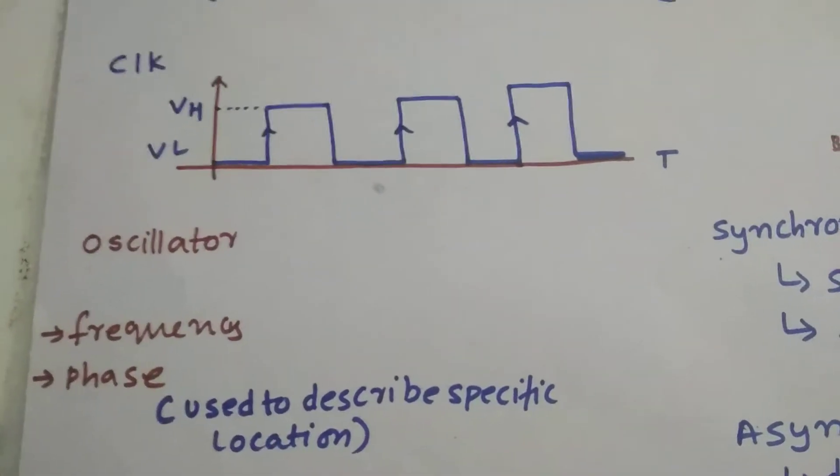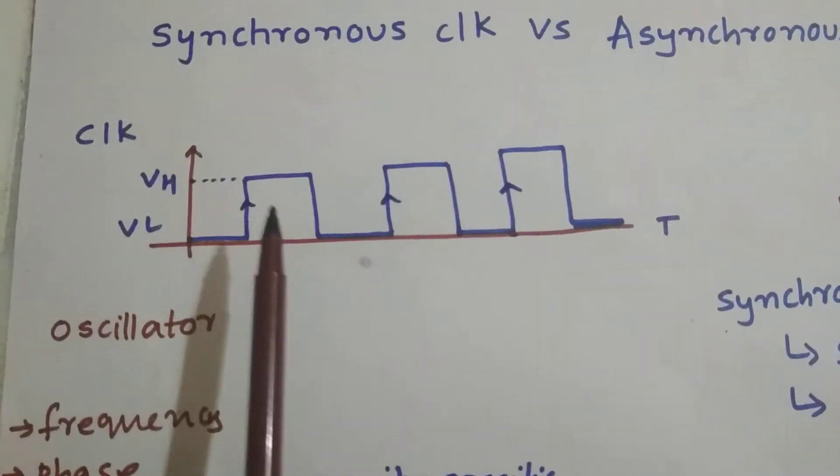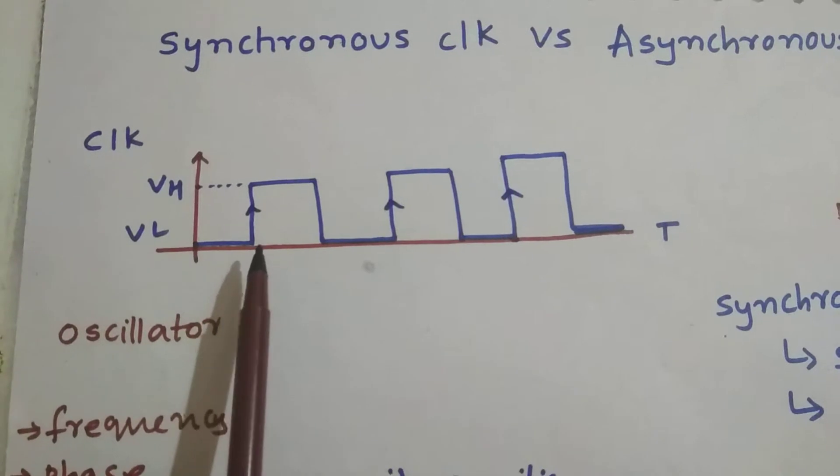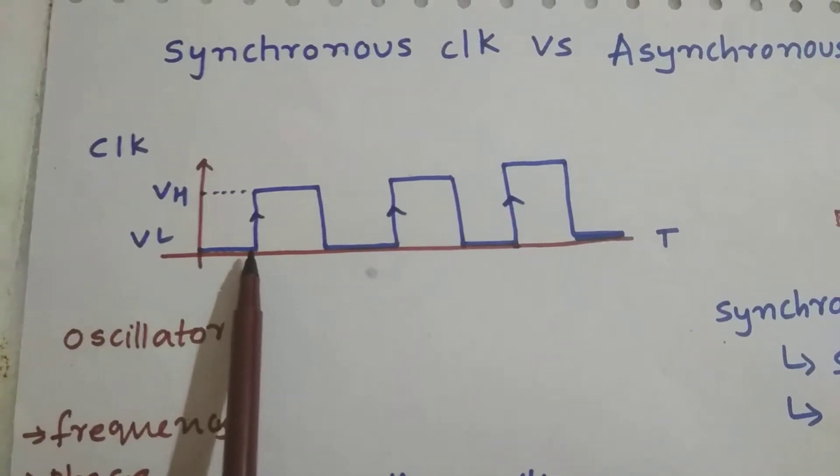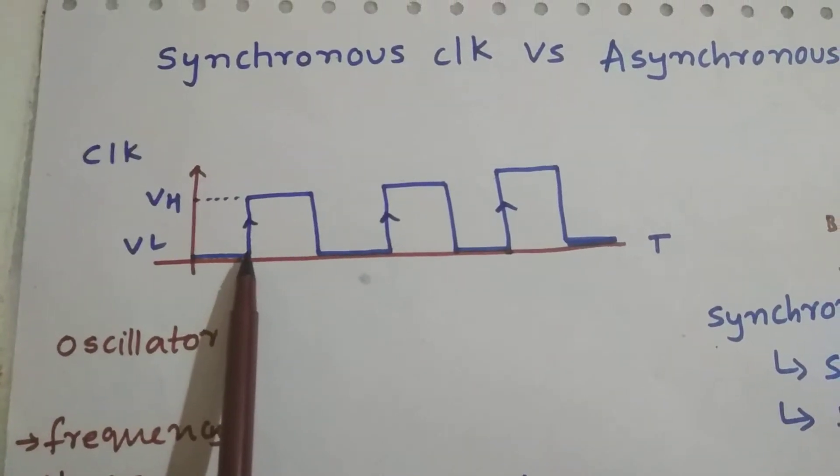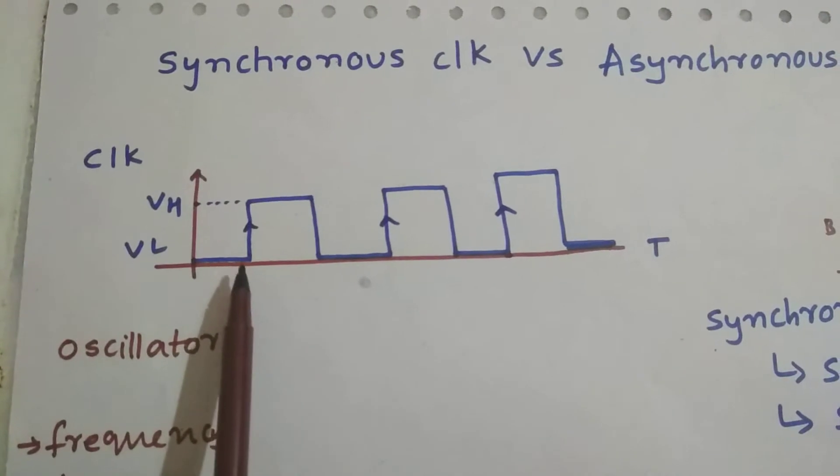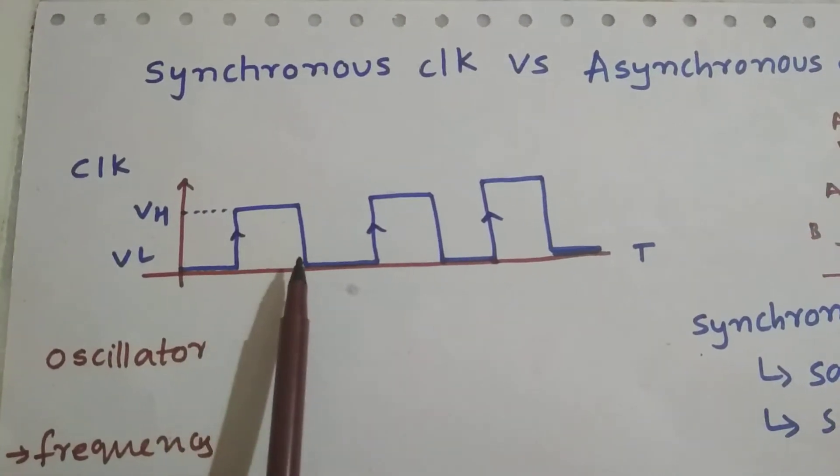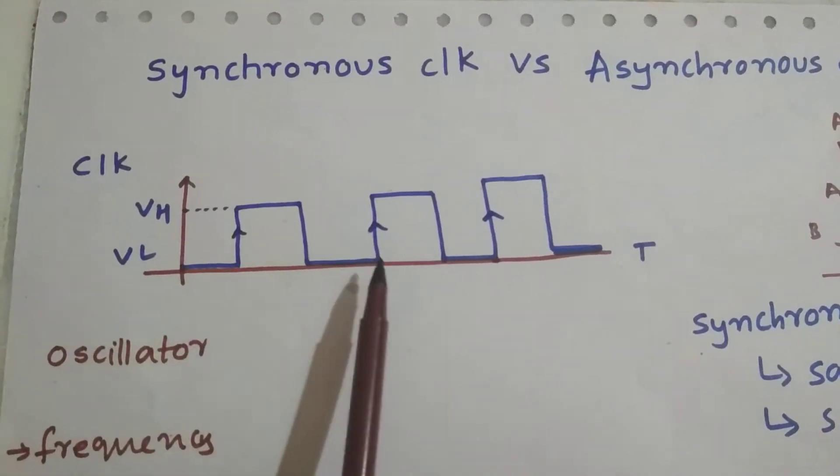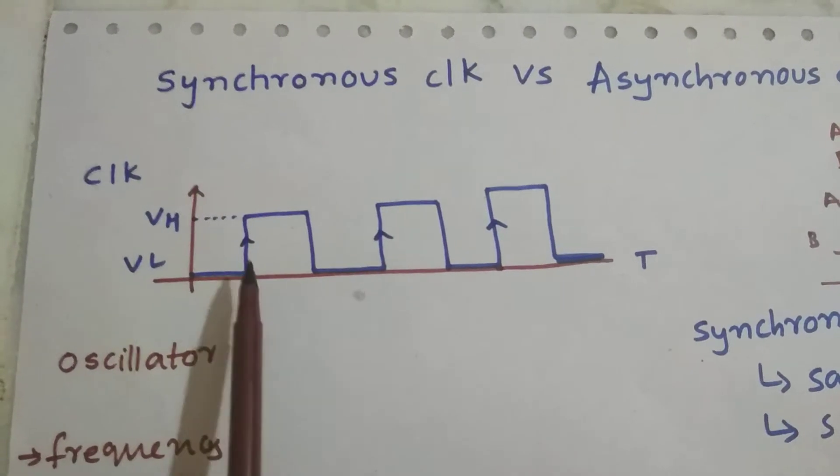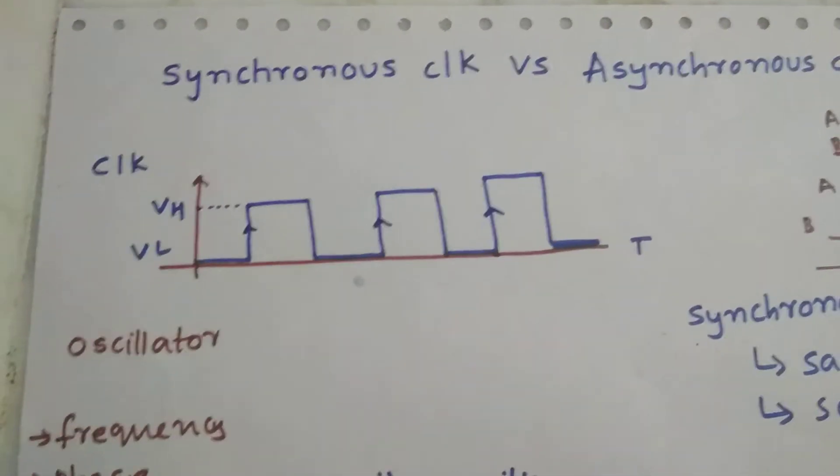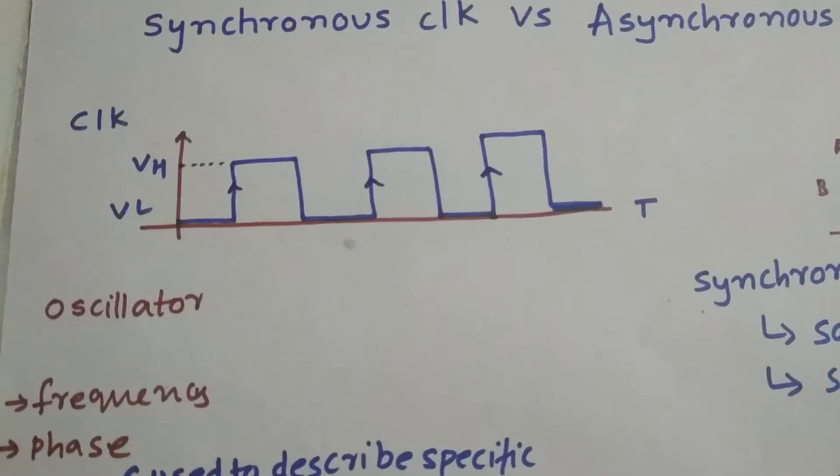The time period is from this point to this point - it's repeating, so this is the time period of a clock. The phase is used to describe a specific location. As you can see where my pen is pointing, this can be a specific location, so this is a phase. And this can be another phase. Since it's repeating, it's already part of this, so this is a phase.